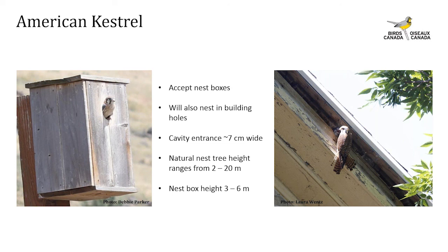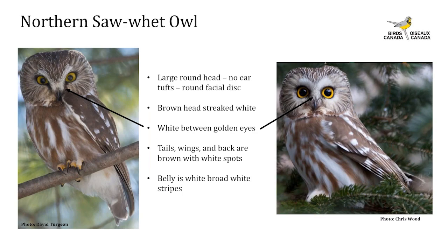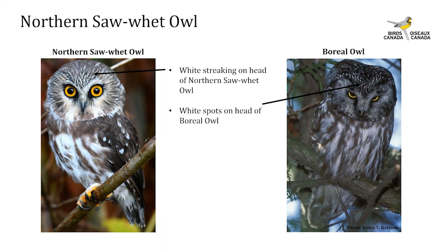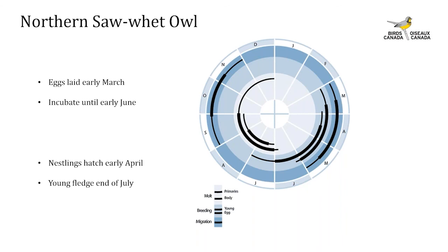The northern saw-whet owl is a very small owl at 18 to 22 centimeters. The only way to tell male from female is in the hand, where females are slightly larger. It has a large round brown head with no ear tufts. The crown and back of the head are streaked with white, and there is a white V-shaped patch between its large golden eyes. The adult's wings and back are brown with white spots, and the belly is white with thick brown stripes. A similar-looking species, the boreal owl, has white spotting rather than white streaking on a brown head.